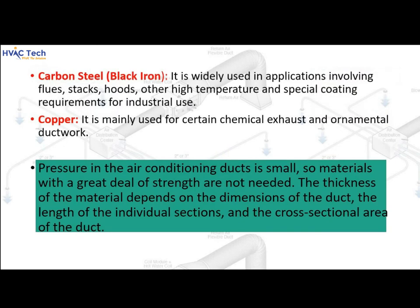Carbon steel (black iron) is widely used in applications involving flues, stacks, hoods, other high-temperature uses, and special coating requirements for industrial use. Copper is mainly used for certain chemical exhaust and ornamental ductwork. Pressure in air conditioning ducts is small, so materials with a great deal of strength are not needed. The thickness of the material depends on the dimensions of the duct, the length of individual sections, and the cross-sectional area.